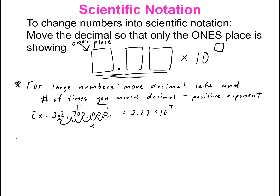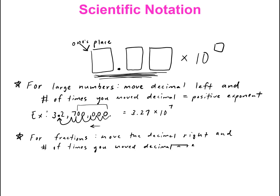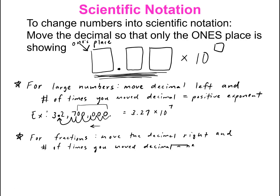For small numbers — fractions, numbers less than one but greater than zero — you move the decimal to the right, because we still want to make it show only the ones place. Just like the previous example, the number of times you moved the decimal becomes a negative exponent.